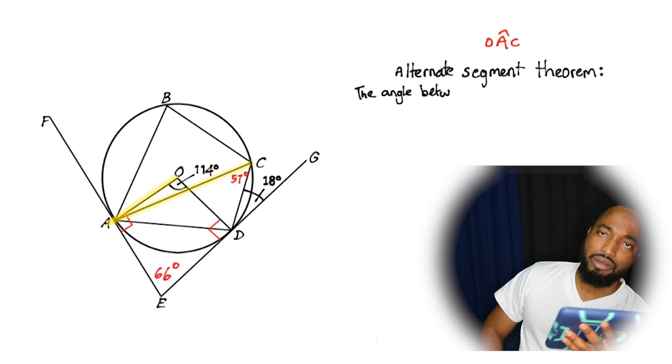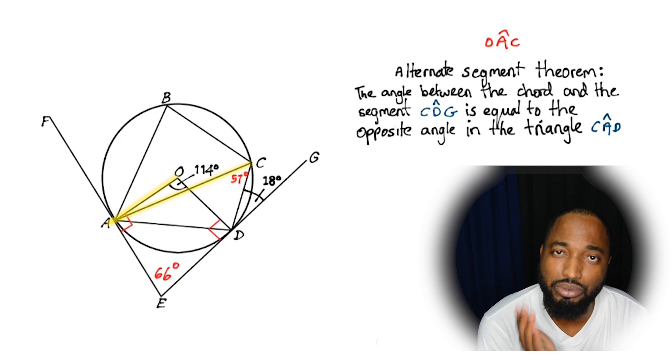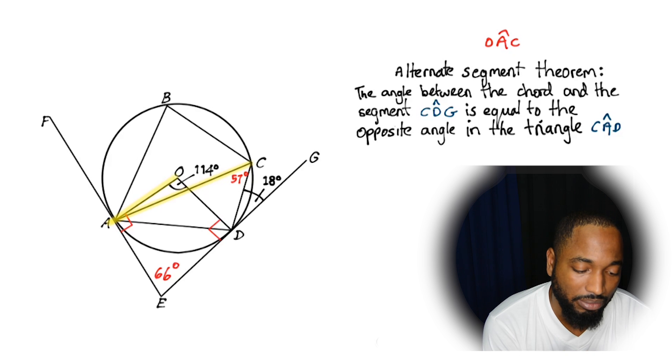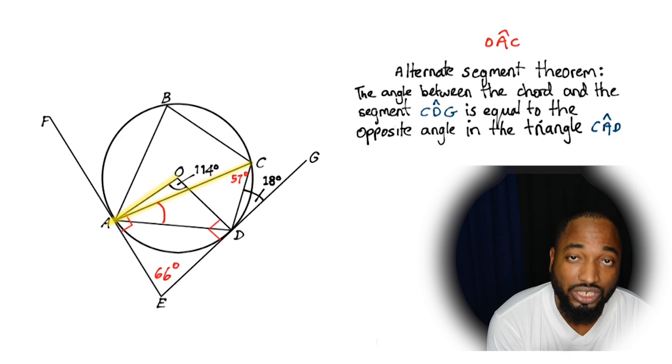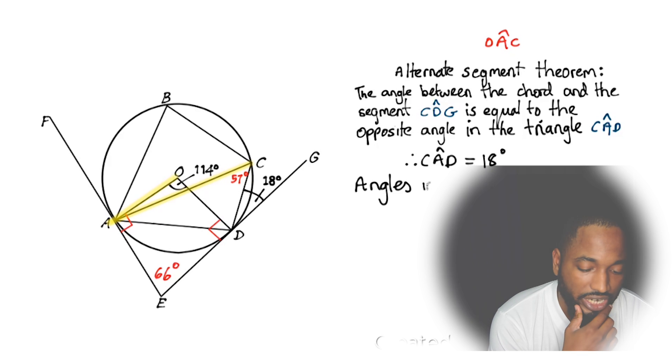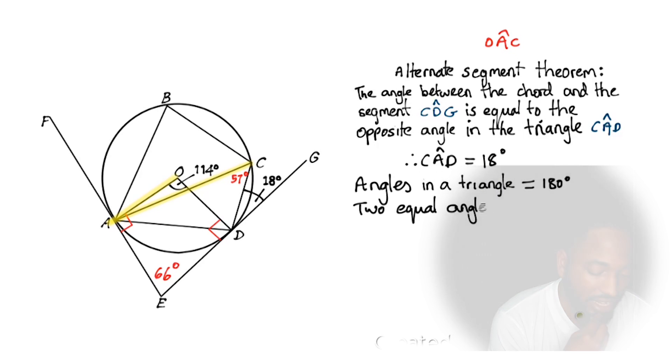So alternate segment theorem. This is a very important rule, the alternate segment theorem. It says the angle between the chord and the segment CDG, so we're looking at this angle here, is equal to the opposite angle in the triangle which is CAD. That's this angle here. So now we'd be able to find out the size of this angle since it's equal to this angle using the alternate segment theorem. So CAD is logically 18 degrees.